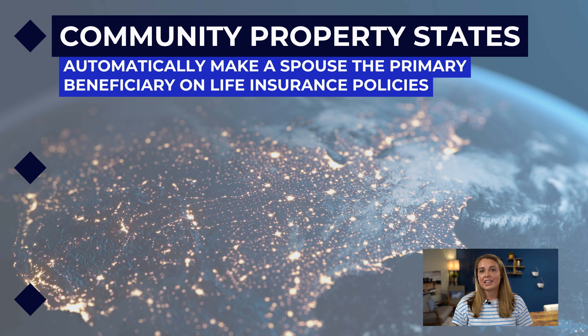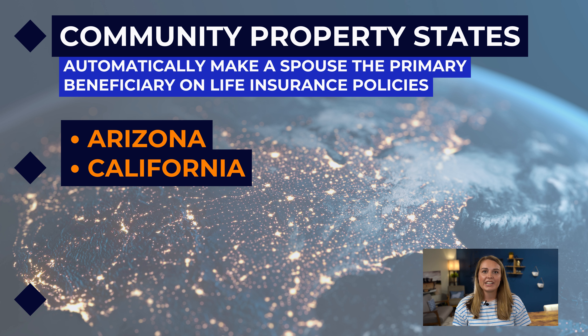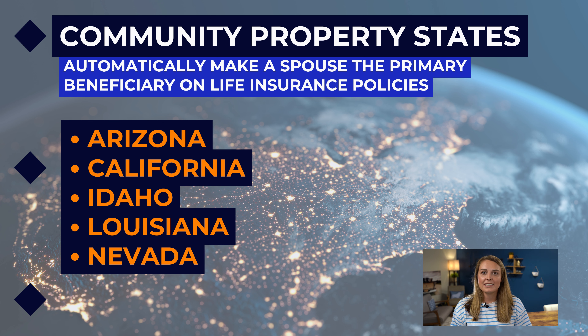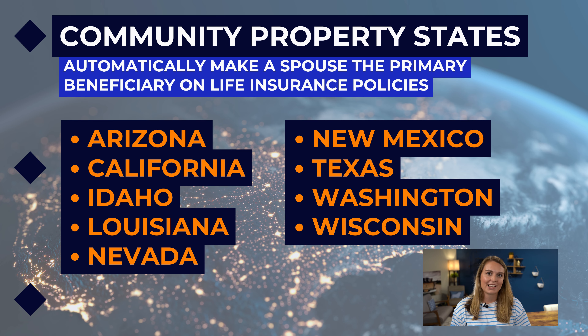Someone can also choose more than one primary or contingent beneficiary. If more than one is chosen, the benefactor must list how the assets should be divided among them. People with more than one child often allocate assets by listing each child as a beneficiary. Keep in mind that community property states automatically make a spouse the primary beneficiary on life insurance policies. If a different beneficiary is desired, the spouse must sign their consent.